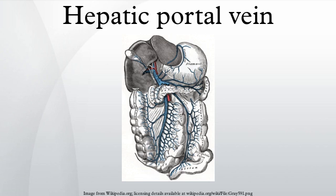The hepatic portal vein is usually formed by the confluence of the superior mesenteric and splenic veins, and also receives blood from the inferior mesenteric, gastric, and cystic veins.